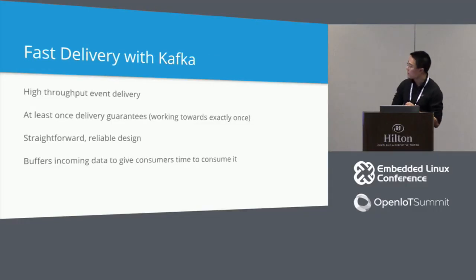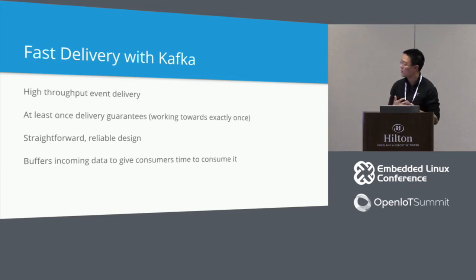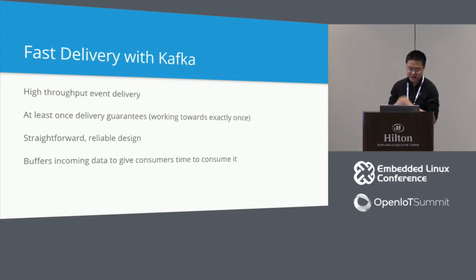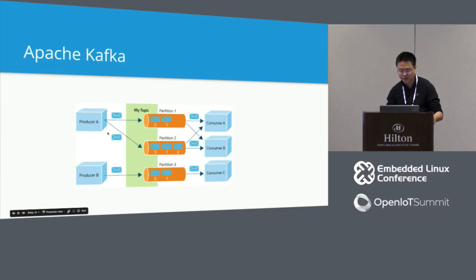Kafka is a distributed system designed to run across many servers. Producers write events and these events get spread across different partitions across different servers. Consumers then pull data from these partitions and do something interesting with them. What's different about Kafka is that the consumers are responsible for maintaining information about which messages they've read — Kafka itself doesn't keep track of where a consumer has read to. So it's very low overhead to add many consumers of the data. Kafka simply buffers data and allows a bunch of different consumers to read that data.